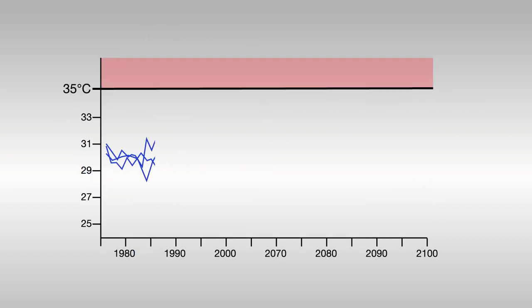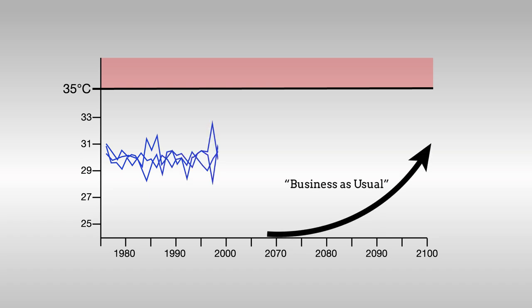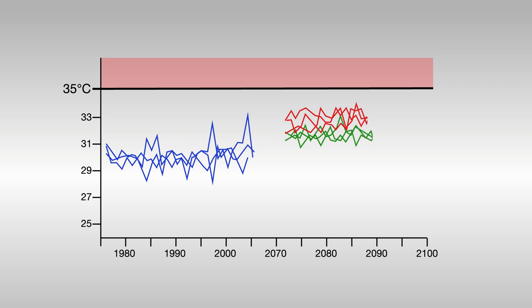The scientists stress that even under the business-as-usual emissions scenario, wet bulb temperatures are not projected to top 35 degrees Celsius more than once every decade or every few decades by the end of the century.